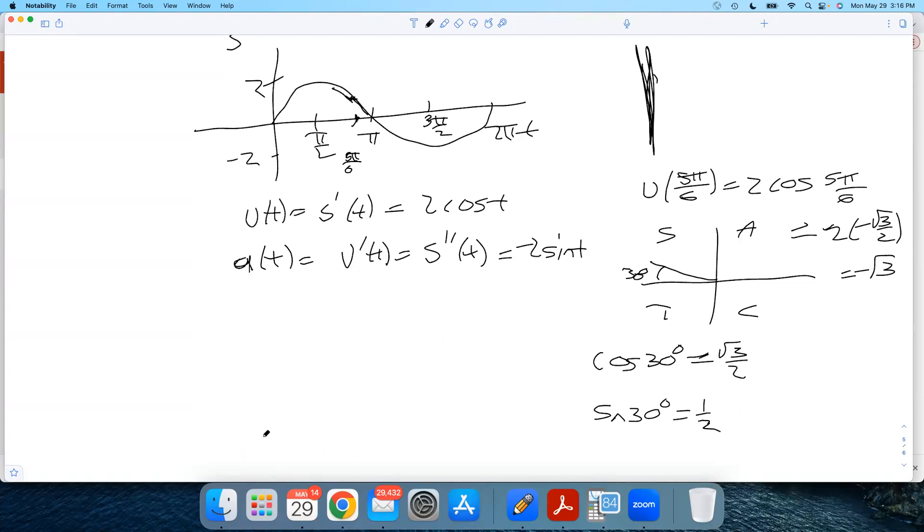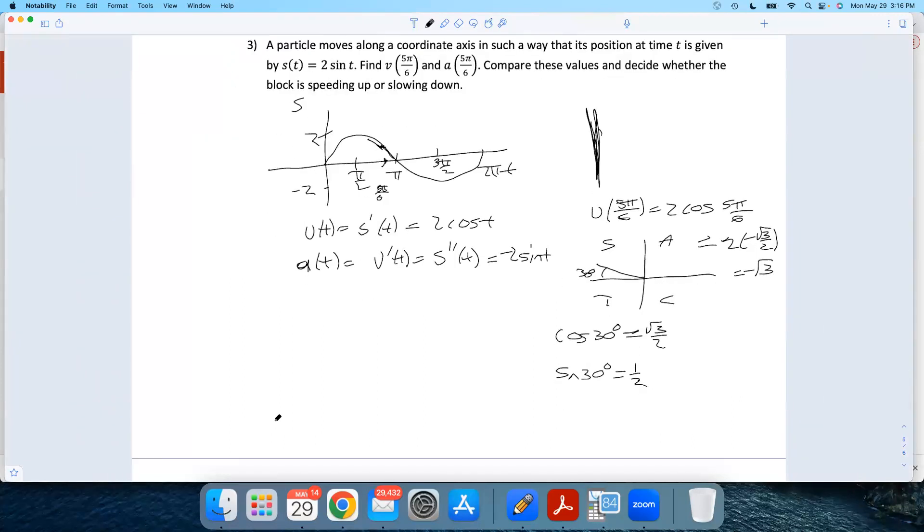What about the acceleration? How quickly is the velocity changing at that point? a(5π/6) will be -2sin(5π/6). Using my reference triangle, I know sin(30°) is 1/2. I'm in quadrant two, so sin(5π/6) is positive 1/2. I get -2 times 1/2, which is -1.